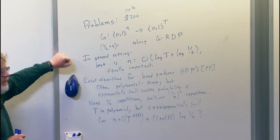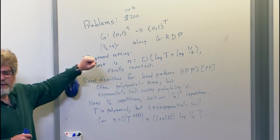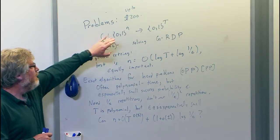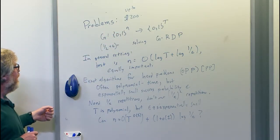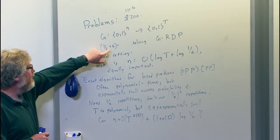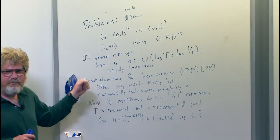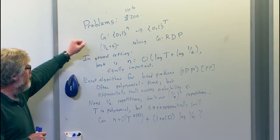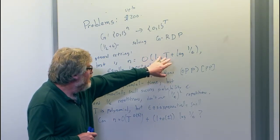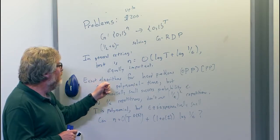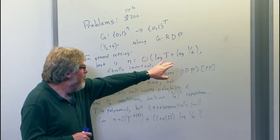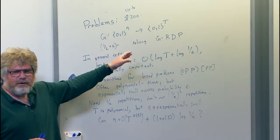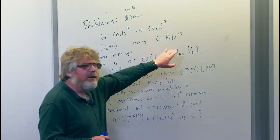For general derandomization, where you don't have this asymmetry between the success probability and the time, we could derandomize by constructing a pseudorandom generator that took some number of n bits to some number of t bits, so that the problem of half-plus-epsilon solving the randomness distinguishing problem for g was t-hard. In the general setting, there's symmetry between t and epsilon. We want the number of random bits to be about log t and log 1/epsilon, so that when you do exhaustive search through all 2^n pseudorandom strings, you have overhead polynomial in t and polynomial in 1/epsilon.